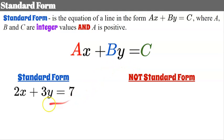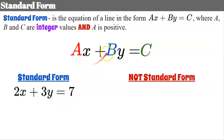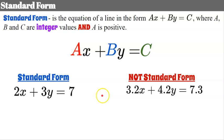Here's an example of a linear equation written in standard form: 2x plus 3y equals 7. The values 2, 3, and 7 represent a, b, and c, and they are all integer values with a being positive. For a non-example: 3.2x plus 4.2y equals 7.3 — these are not integers; they are rational numbers, and therefore this is not written in standard form.